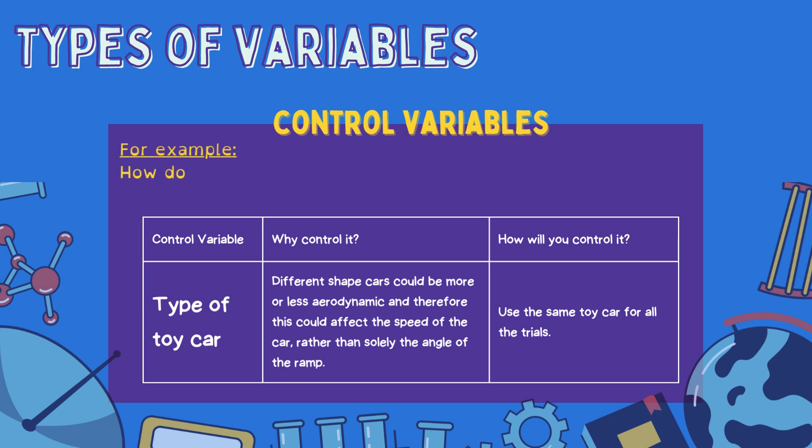For the second question — how does the angle of the ramp affect how fast a toy car travels? — one possible control variable could be the type of toy car. Different shaped cars could be more or less aerodynamic, and therefore this could affect the speed of the car rather than solely the angle of the ramp. To control this, we would use the same toy car for every single trial, for every different angle of the ramp, and for every repetition. This ensures it is the independent variable causing the measurable effect in the dependent variable.